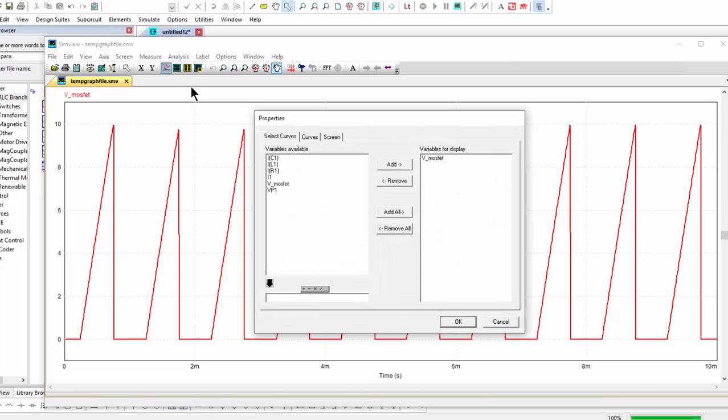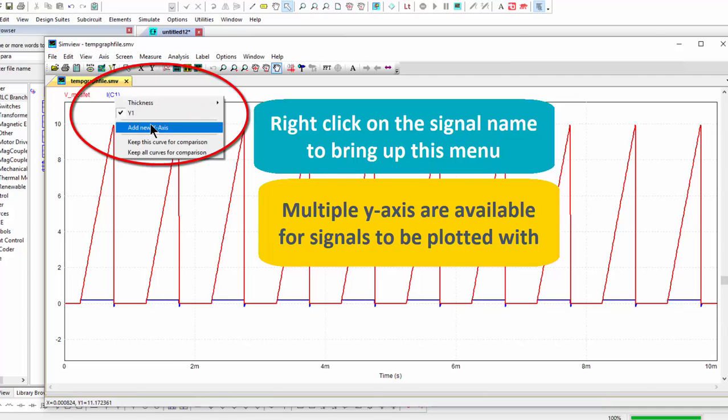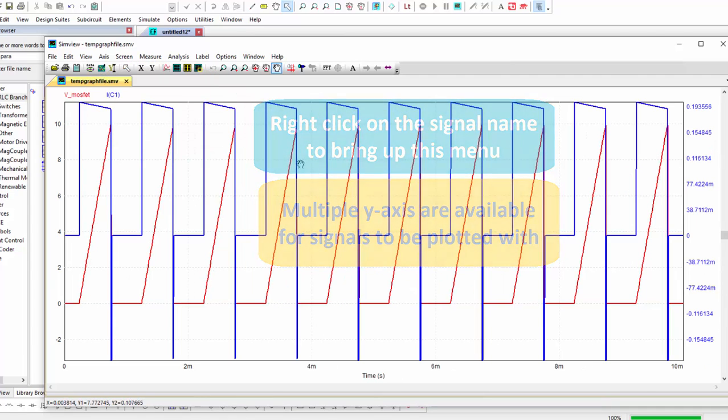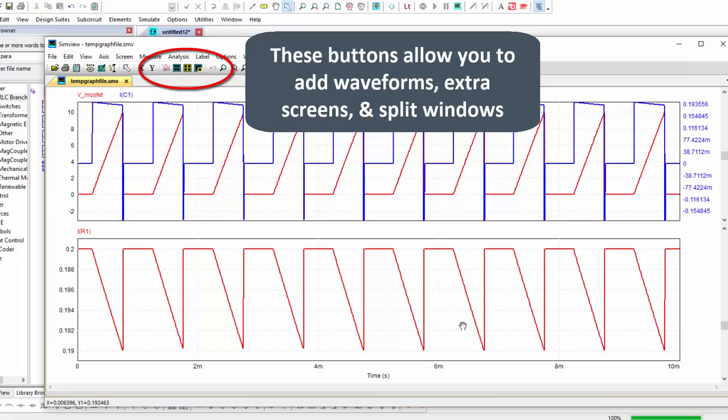We can also lay on top of that a new signal, the current flowing through the capacitor, and we can see that's quite a small number. So what we could do is actually right-click that and plot that on a different axis, and we can see what that looks like. And add alternate screens to look at other values here as well, and that gives us more information about what's happening.